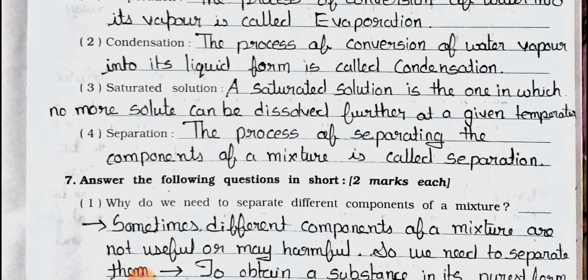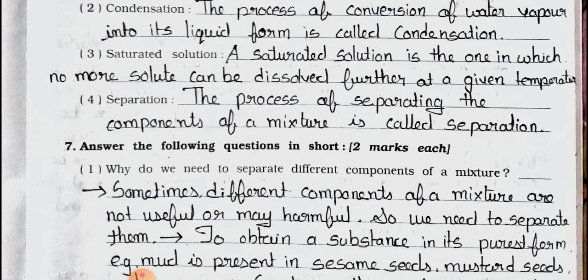Number 3: Saturated solution. Answer: A saturated solution is the one in which no more solute can be dissolved further at a given temperature. Number 4: Separation. Answer: The process of separating the components of a mixture is called separation.